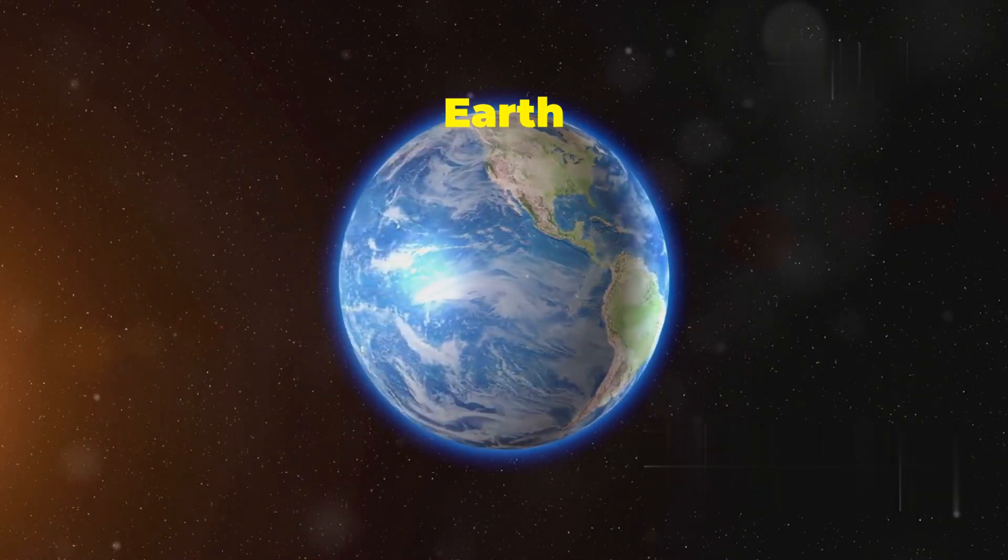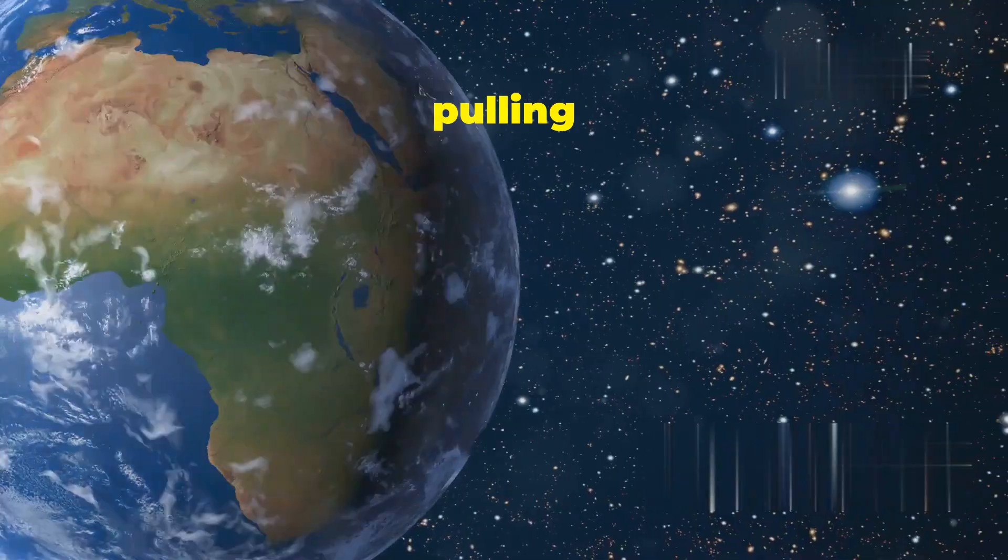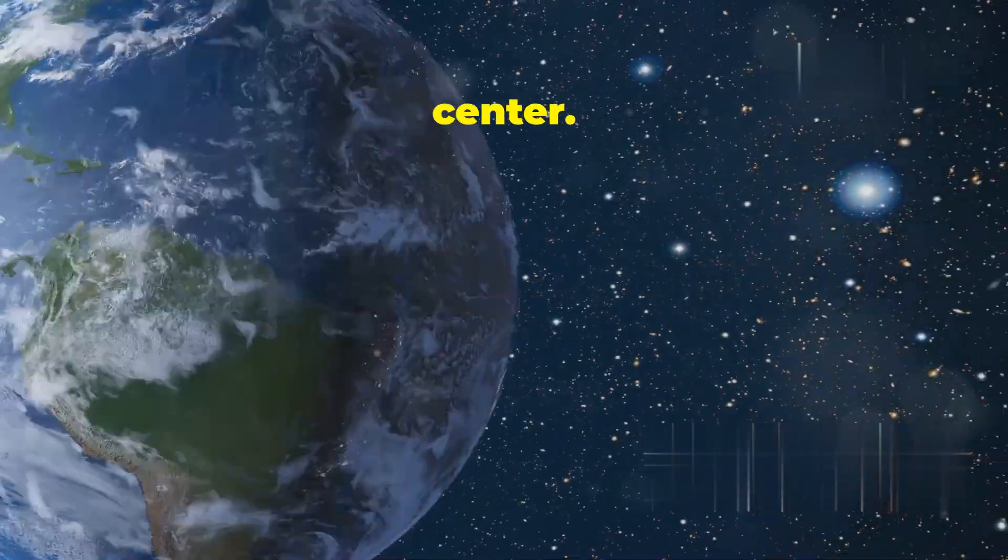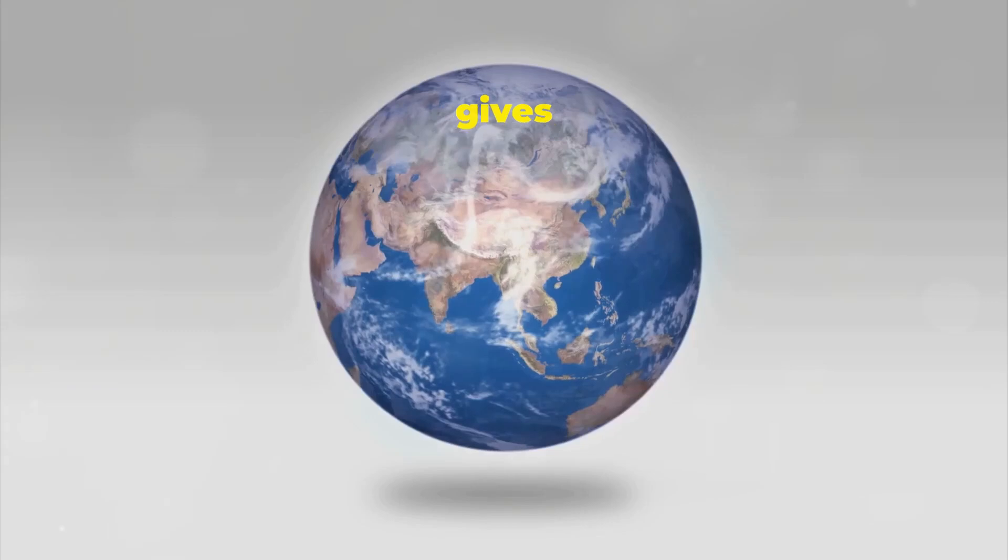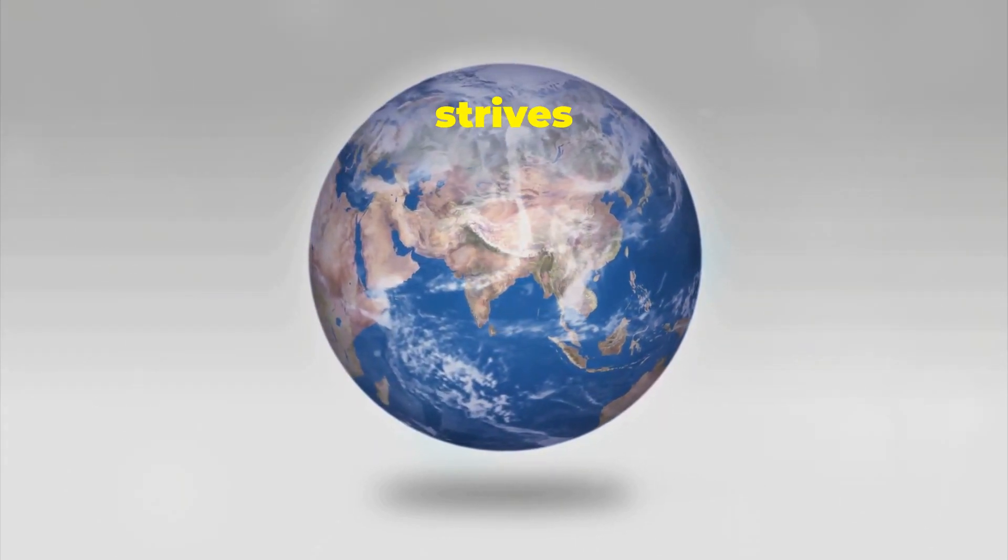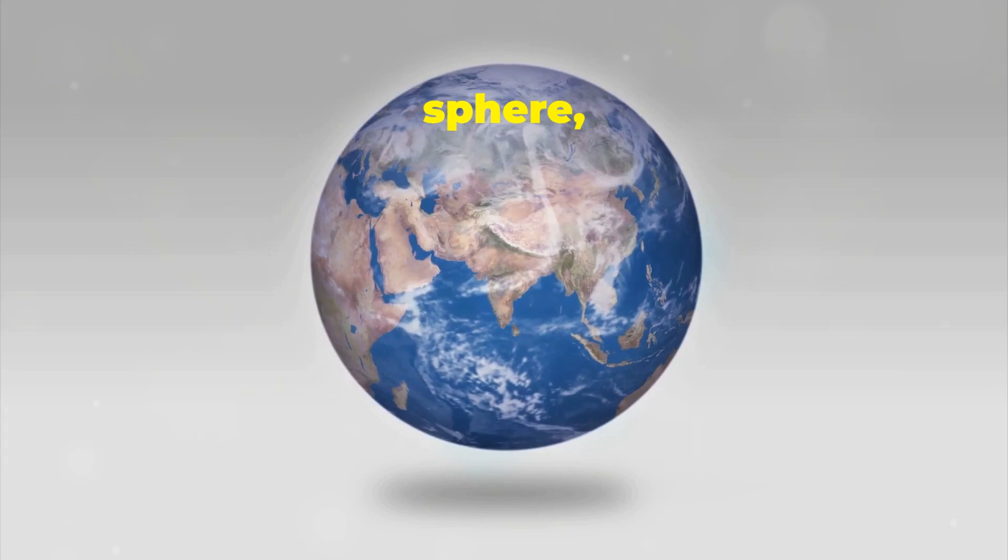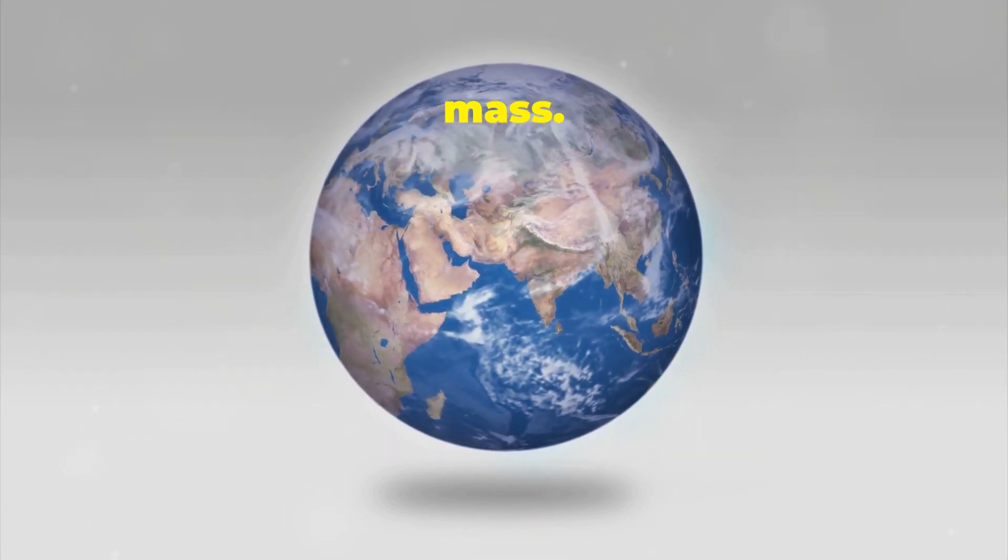While centrifugal force stretches Earth outward at the equator, gravity acts as a counterbalance, pulling everything towards the planet's center. This constant tug-of-war between gravity and centrifugal force is what gives Earth its unique oblate spheroid shape. Gravity strives to mold Earth into a perfect sphere, where all points on the surface are equidistant from the center of mass.